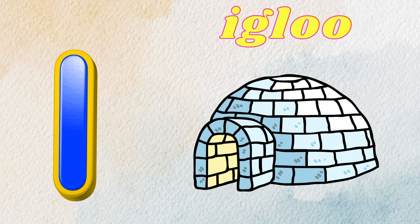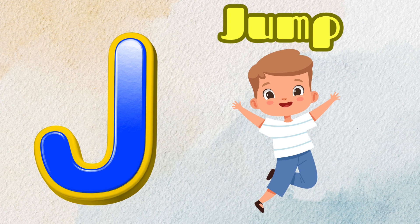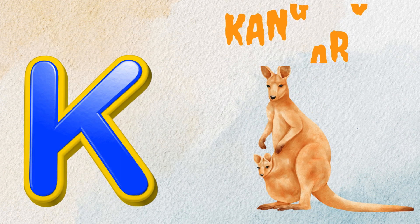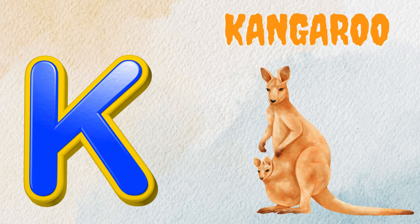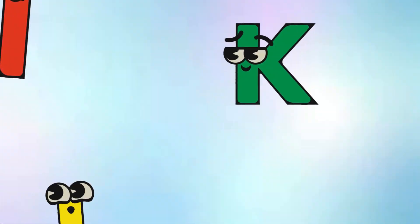I is for Igloo, I-I-Igloo. J is for Jump, J-J-Jump. K is for Kangaroo, K-K-Kangaroo. L is for Lion, L-L-Lion.